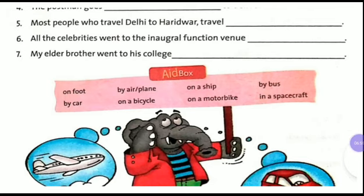Number five: most people who travel daily to Haridwar travel by bus — fill in 'by bus' in the fifth blank. Sixth: all the celebrities went to the inaugural function venue by car. Seven: my elder brother went to his college on a motorbike — write 'on a motorbike' in the seventh blank. This is how you have to fill up the blanks from the phrases given in the aid box.